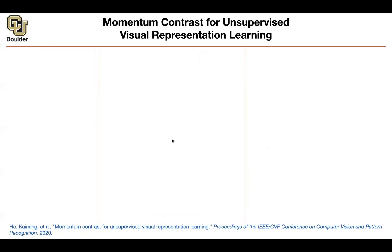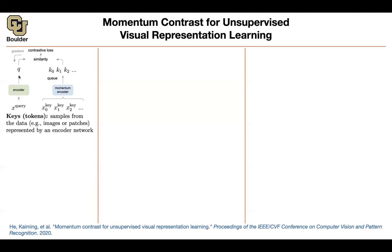I can continue to momentum contrast — this is MoCo. This figure is going to help us a lot, so we are going to go back to it as we go through the math. You are going to have some tokens which correspond to your keys. These are samples from the data, which could be your images or image patches. These are basically K0, K1, K2, etc., coming out of your images being pushed through an encoder. This way, you are turning unsupervised learning into a dictionary lookup problem — I have a query: which one of these keys is most similar to me?